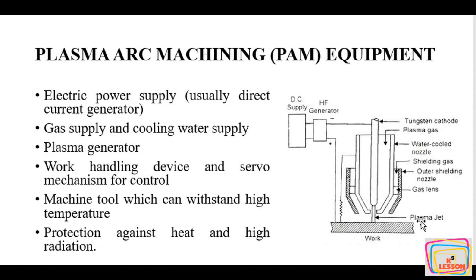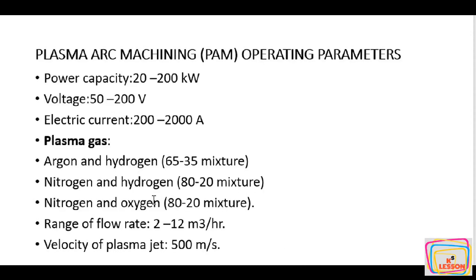In this machining, there are some mandatory control parameters. Power supply required is 20 to 200 kilowatts, voltage required is 50 to 200 volts, and electric current required is 200 to 2000 amperes. The plasma gas required is a mixture of two gases. The first mixture is argon and hydrogen — argon at 65% and hydrogen at 35%. Nitrogen and hydrogen have an 80-to-20 ratio respectively. Nitrogen and oxygen also have an 80-to-20 ratio. The range of flow rate is 2 to 12 cubic meters per hour, and the velocity of the plasma jet is 500 meters per second.